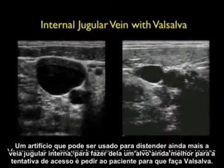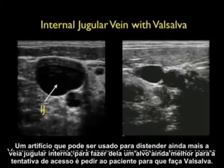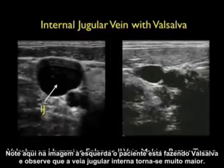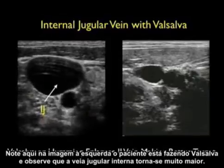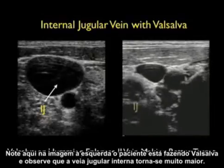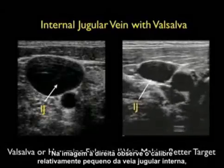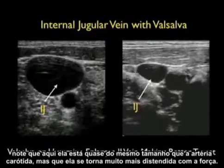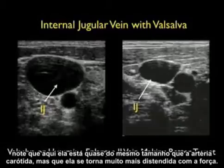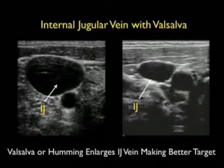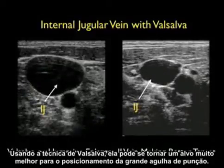One pearl that can be used to further distend the internal jugular vein and make it a better target for cannulation is to have the patient valsalva or hum. Notice in the image to the left the patient is bearing down and the internal jugular vein becomes much bigger. In the image to the right, note the relatively small caliber of the internal jugular vein — it's almost as big as the carotid artery at rest, but becomes much more distended as the patient bears down. Using the Valsalva technique can make it a much better target for placement of the large cannulation needle.